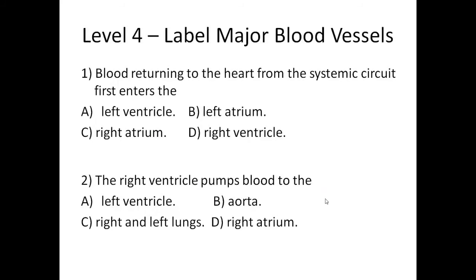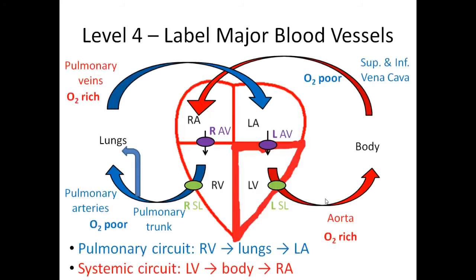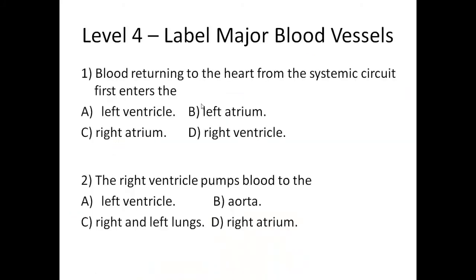Here are some practice questions. Question one: blood returning to the heart from the systemic circuit first enters the... Systemic means the body, not the lungs. Going back to your drawing — blood coming back from the body travels through the superior and inferior vena cava to the right atrium. Looking at the answer choices, we don't see the vena cava listed, but we do see the right atrium, so that's the answer.